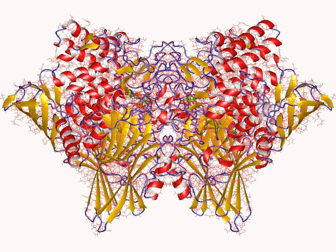In enzymology, cellobiose phosphorylase (EC 2.4.1.20) is an enzyme that catalyzes the chemical reaction: cellobiose plus phosphate yields α-D-glucose 1-phosphate plus D-glucose. The two substrates of this enzyme are cellobiose and phosphate, whereas its two products are α-D-glucose 1-phosphate and D-glucose. This enzyme belongs to the family of glycosyltransferases, specifically the hexosyltransferases.